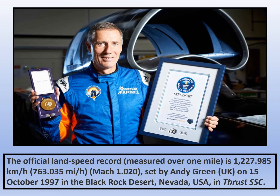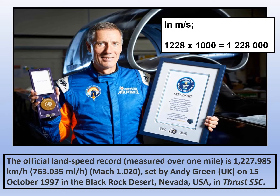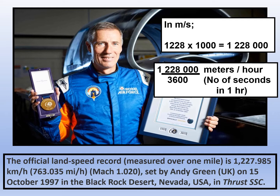The land speed record was phenomenal — 1227 kilometers per hour. As mentioned, kilometers per hour isn't much use to us, so let's convert that into meters per second. 1228 times 1000 takes you from kilometers to meters, giving us 1,228,000. Divided by 3600 — the number of seconds in one hour — we get 341 meters per second. That's why it tells us it's Mach 1.02, with Mach 1 being the speed of sound at about 340 meters per second.